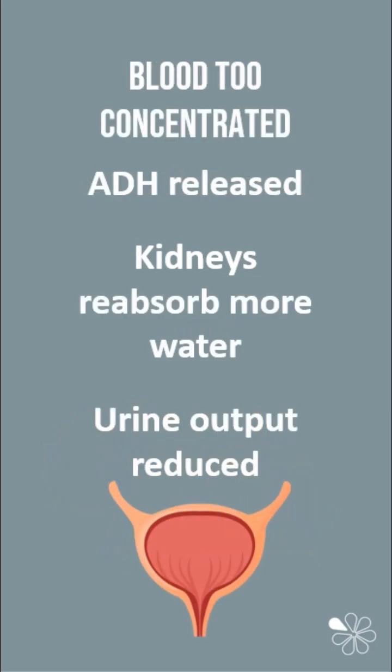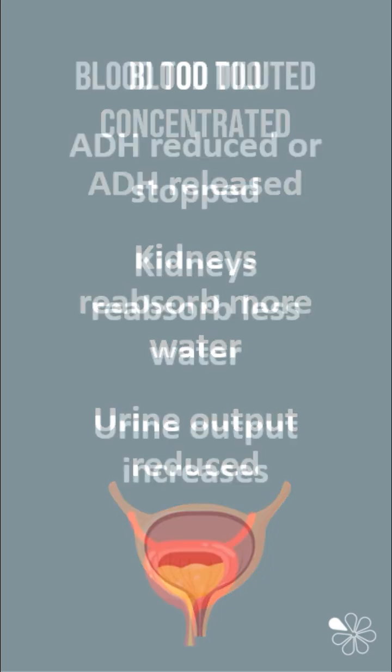If the blood is too concentrated, this is due to low water levels, the hypothalamus signals the pituitary gland to release ADH, which acts on the kidneys, making them reabsorb more water. Urine output is reduced and concentrated, and fluid balance returns to normal, which switches off the ADH.